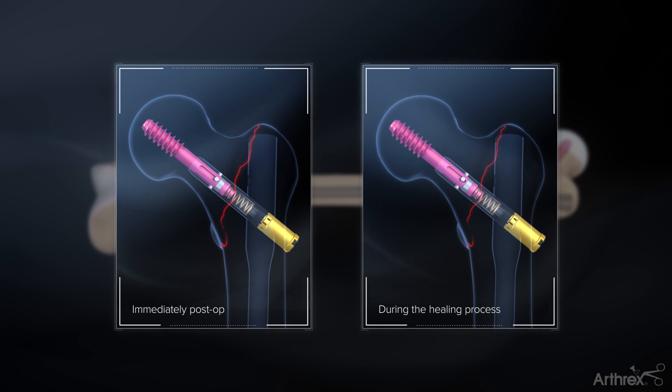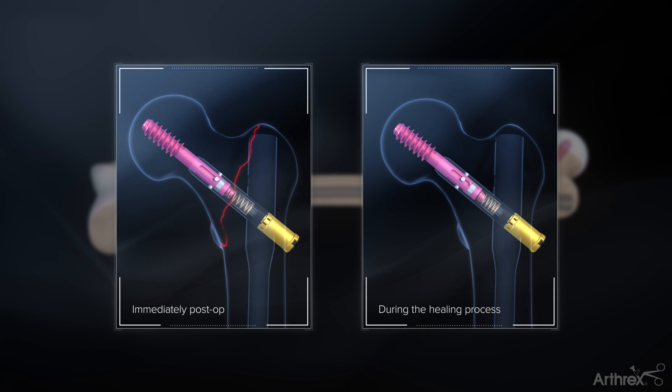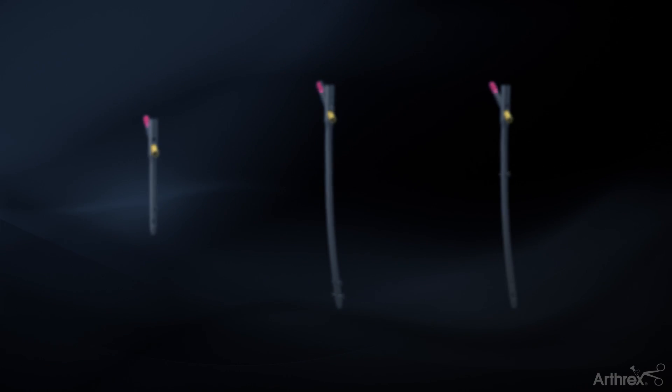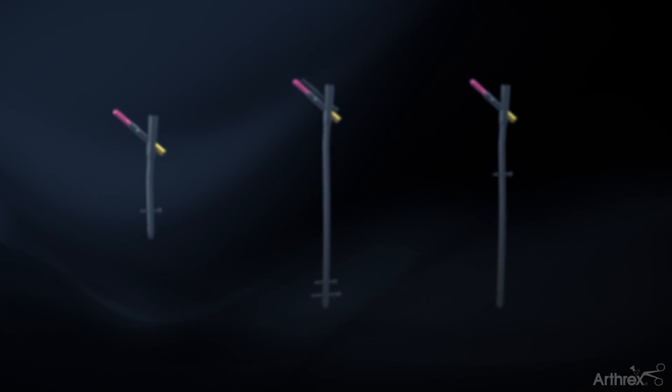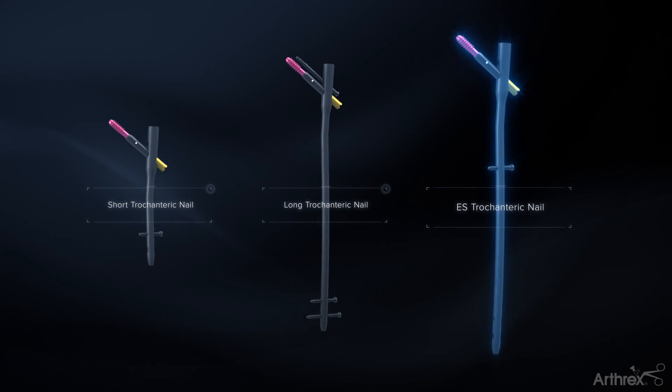As the fracture begins to heal, the telescoping lag screw is able to compress up to 10 mm without any lateral protrusion into the surrounding tissue. The Arthrix trochanteric nail system is available in three nail types: the short nail, long nail, and innovative ES nail.